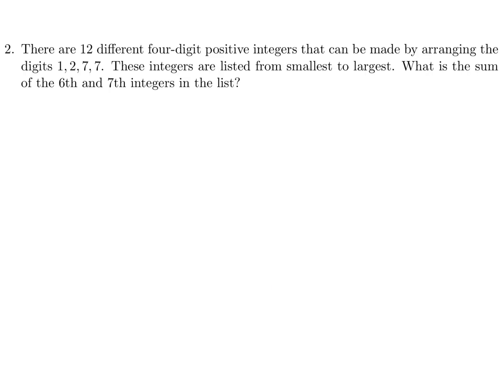There are 12 different four-digit positive integers that can be made by arranging the digits 1, 2, 7, 7. These integers are listed from smallest to largest. What is the sum of the sixth and seventh?